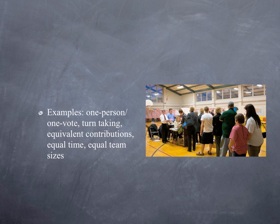Examples of equality matching include equal time — for instance, in a political debate, the various debaters expect equal time. Also equal team size and rules for taking turns. Equality matching also has a negative side: restitution in kind and tit-for-tat vengeance are also equality matching.